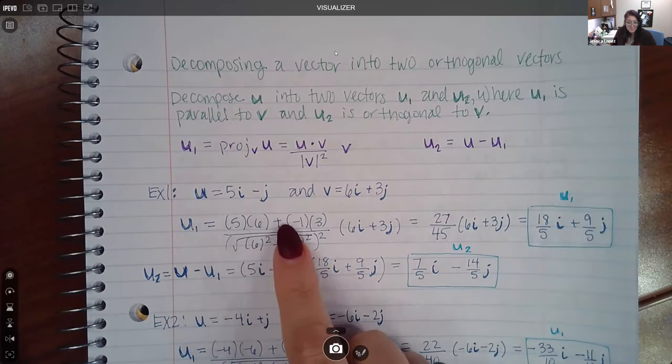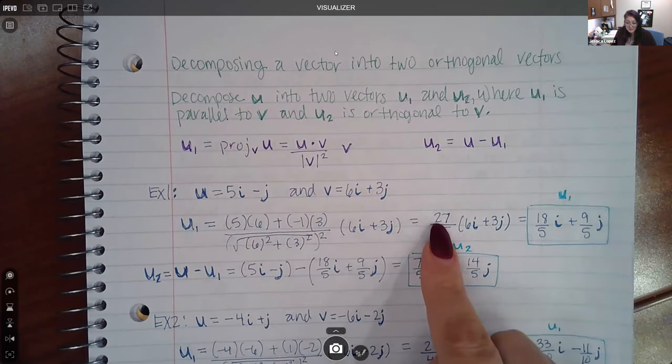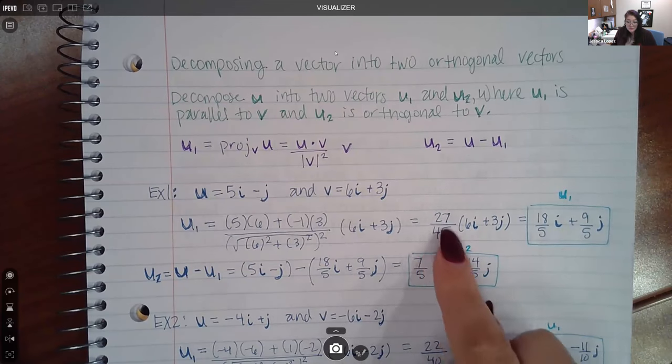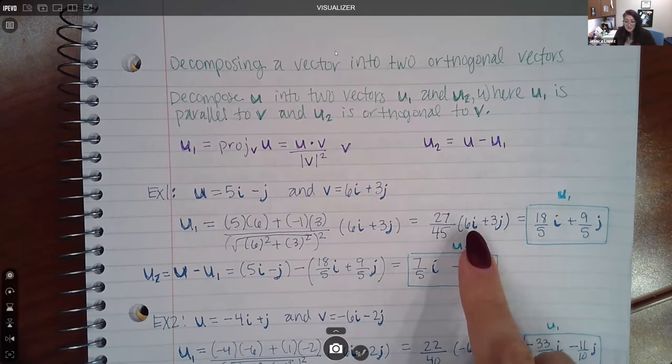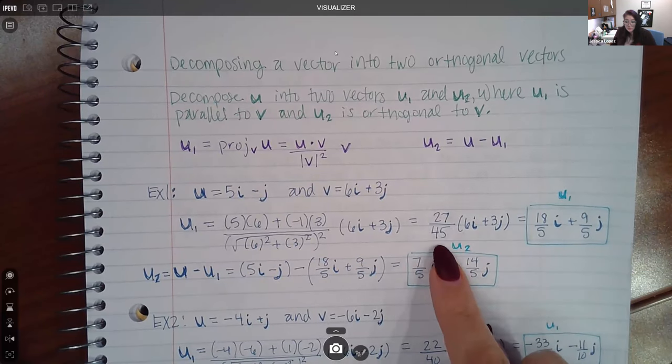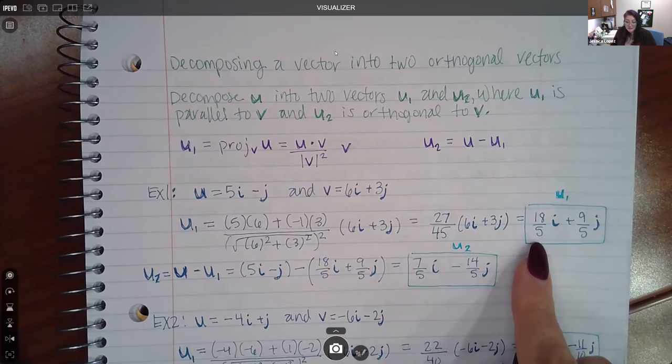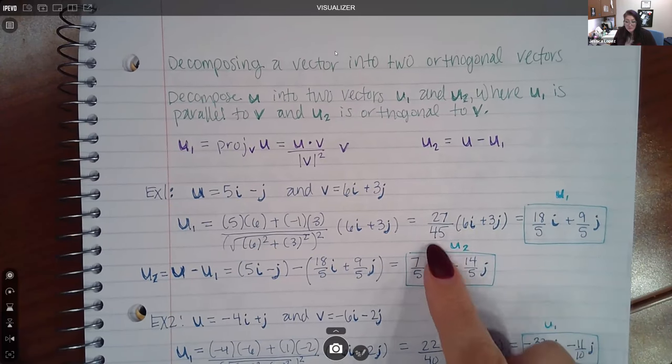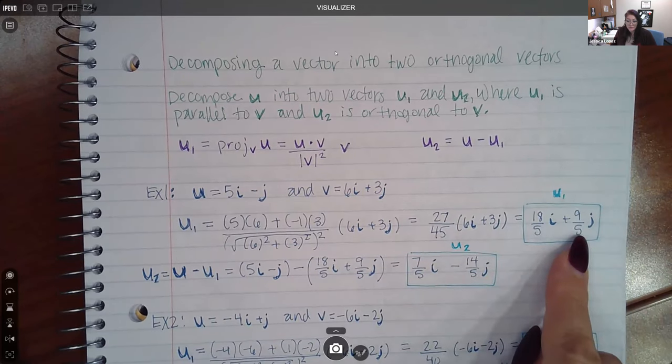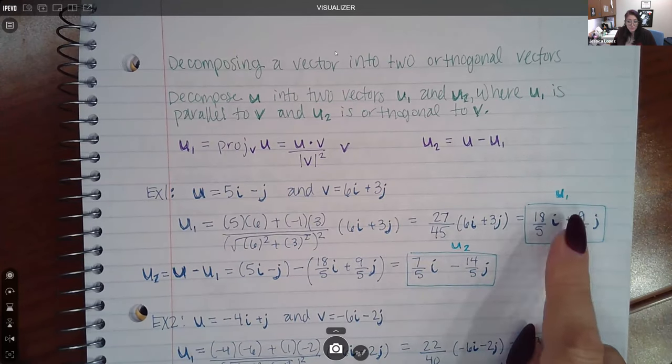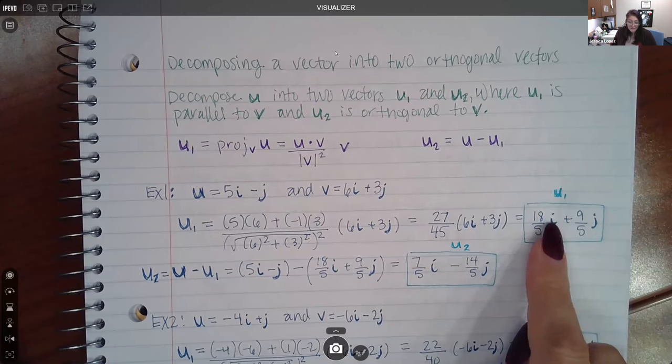Up on top, you had 30 minus 3, which resulted in 27. And then this fraction here does have to multiply to each component for the vector V. So 27 over 45 times 6 reduced to 18 over 5, and 27 over 45 times 3 reduced to 9 over 5. And this is going to be your U1 value.